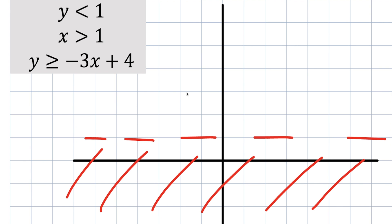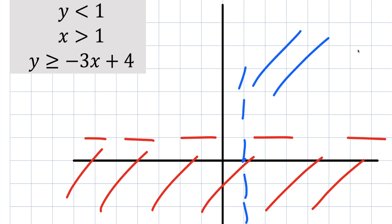We do the exact same thing for x greater than 1 — go to the right, draw a dashed line because it's not or equal to, and shade to the right. So all of this would be a common area so far, but we're not done yet.